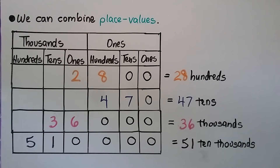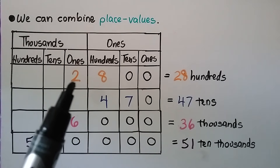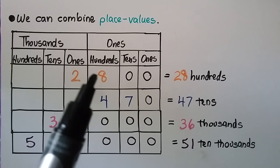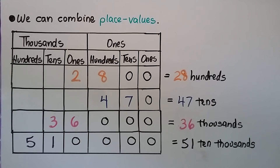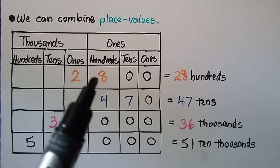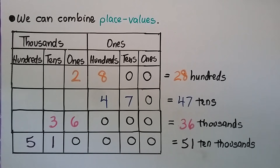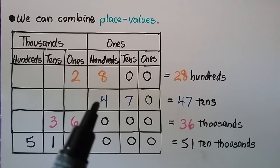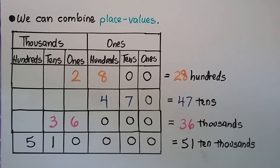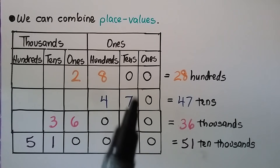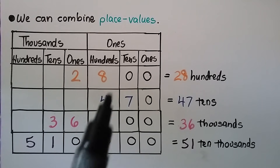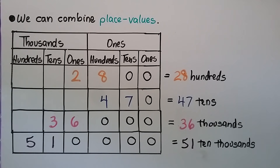We can combine place values. Look at this number: we have a two in the one thousands place and an eight in the hundreds place with zero in the tens and ones — that's two thousand eight hundred. But we can also combine these two place values together and say we have twenty-eight hundreds. You might even hear people say 'twenty-eight hundred.' Now look at this number: we have a four in the hundreds place and a seven in the tens place and zero ones. We can group these two place values together — it's equal to forty-seven tens. Four hundred seventy is equal to forty-seven tens.